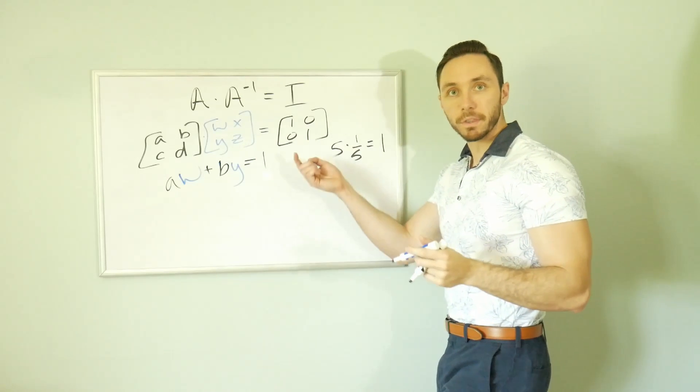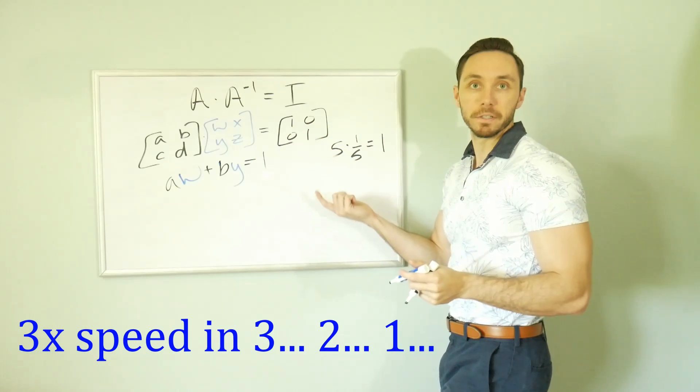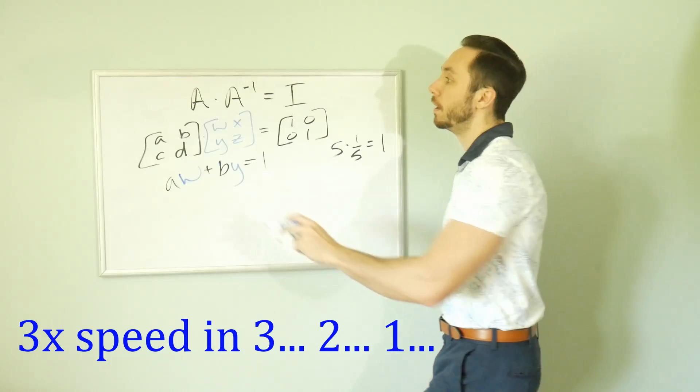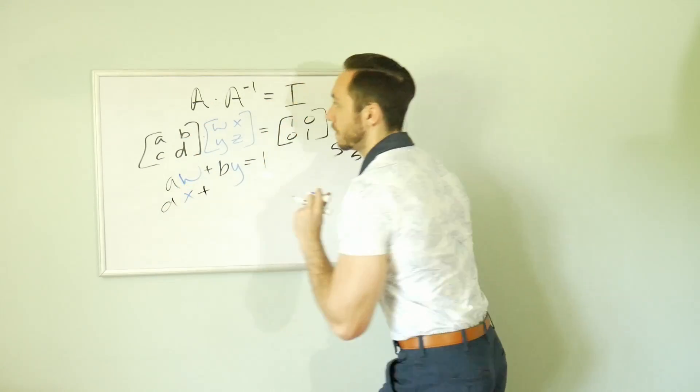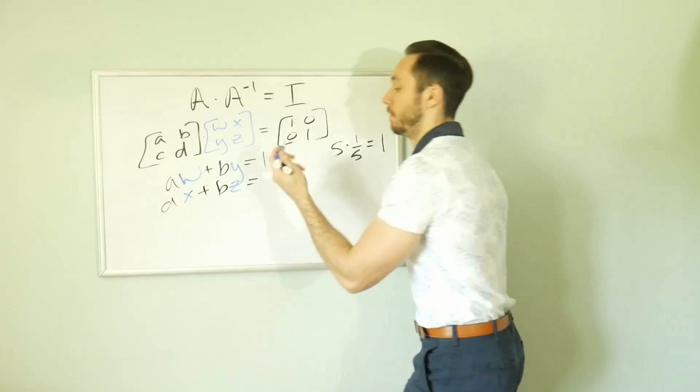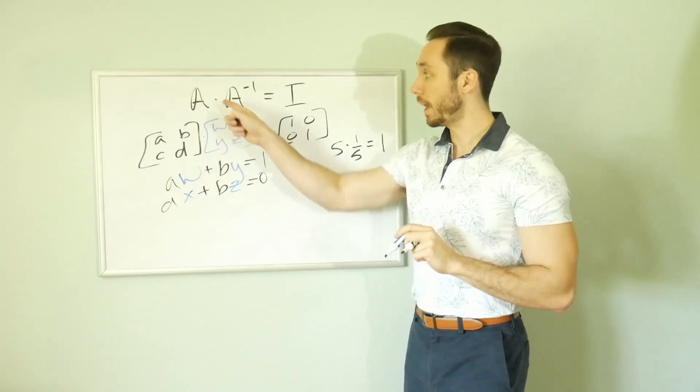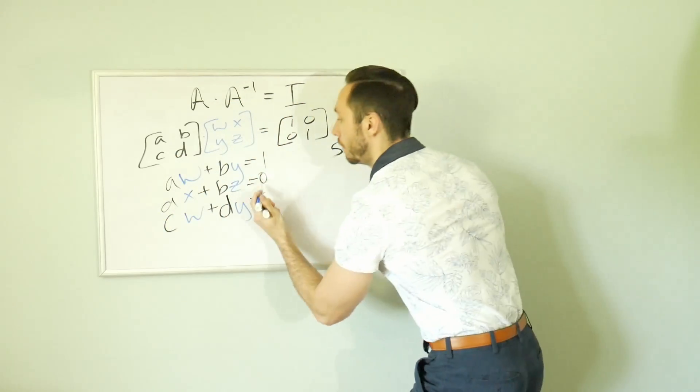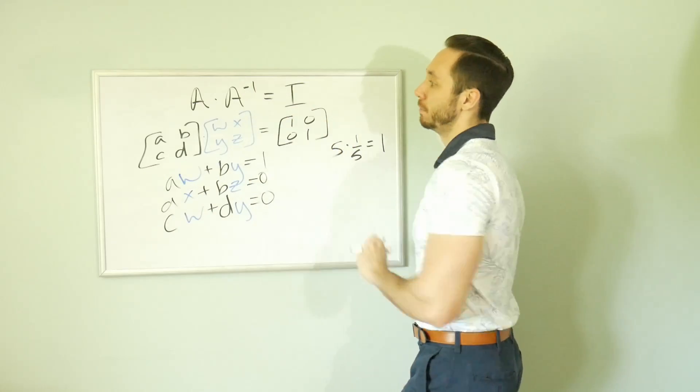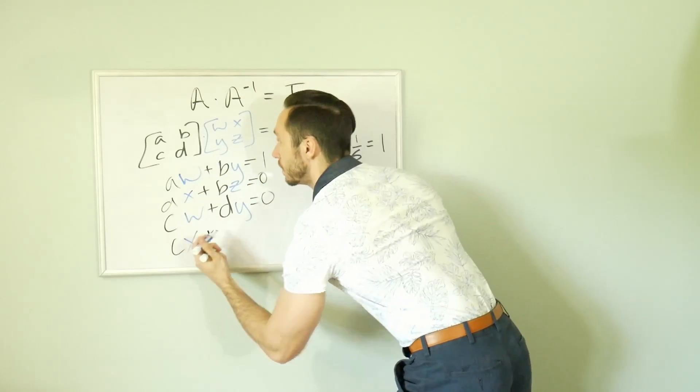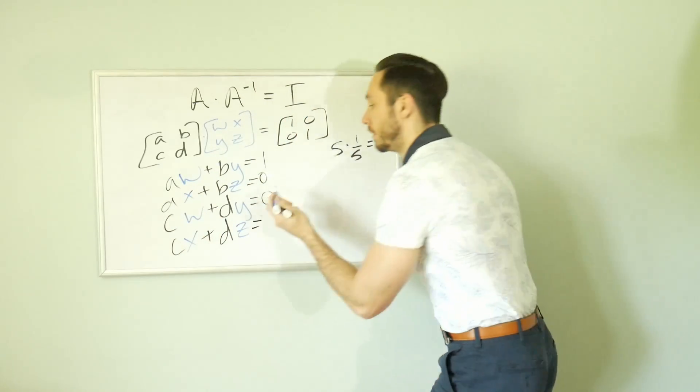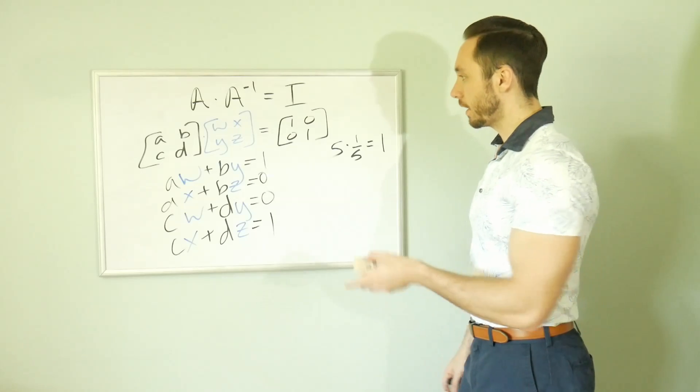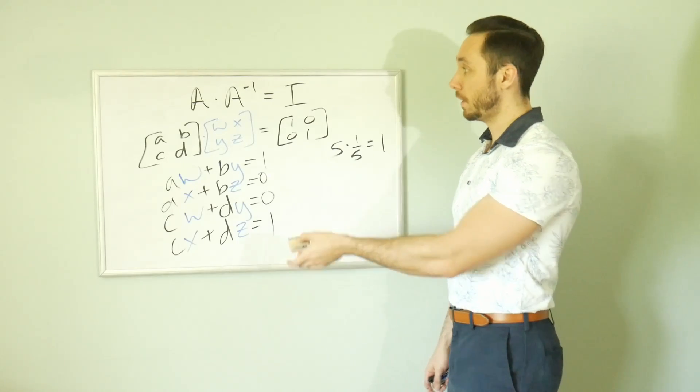And we can do this for the other three entries of this matrix here. So we can do A, B. And now we're multiplying this by the second column, which is X and Z. So I'm going to erase some of the clutter here. I'm just going to keep the system. I no longer need this.